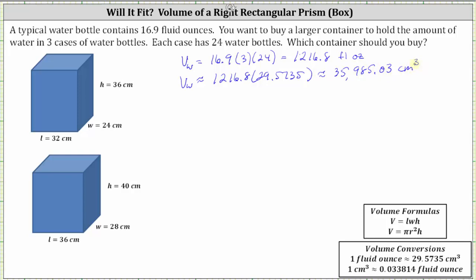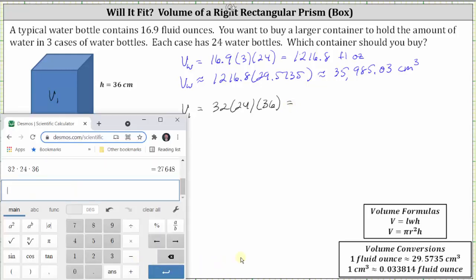Now to determine the volume of the two containers. Let's call the first volume V sub one and the second volume V sub two. Notice both containers are right rectangular prisms, and therefore the volume is equal to the length times the width times the height. V sub one is equal to 32 times 24 times 36. These units are in centimeters, which is why the volume will be in cubic centimeters. The volume is equal to 27,648 cubic centimeters.